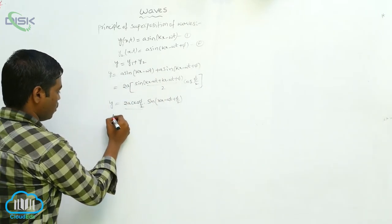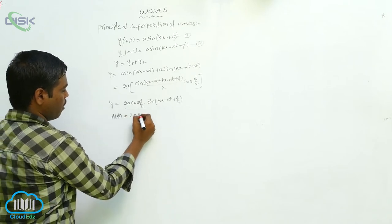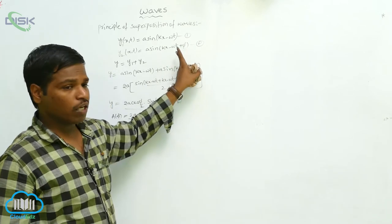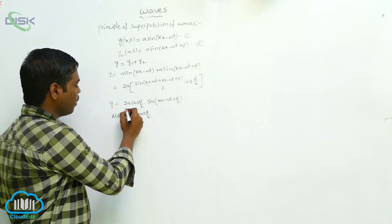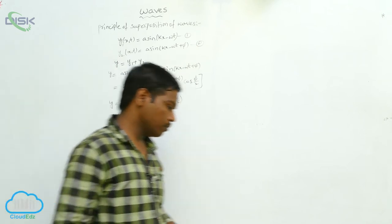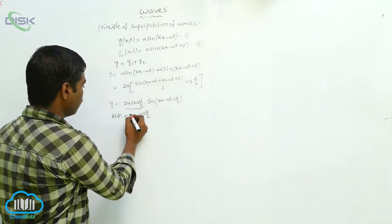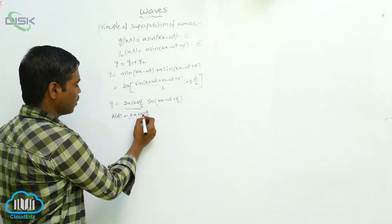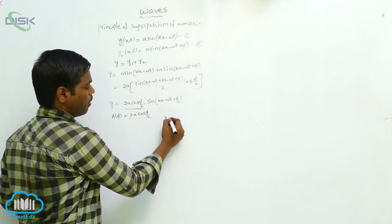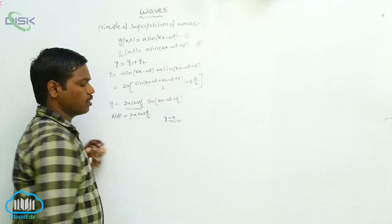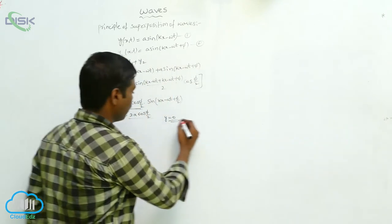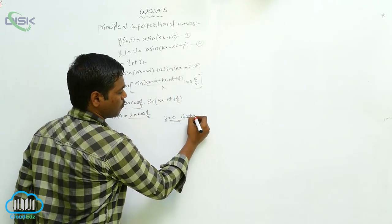The amplitude A(φ) = 2a cos(φ/2). When these two waves are travelling in the medium, the amplitude is changing from point to point. When the two waves are travelling in opposite directions, the resultant displacement becomes 0. When the displacement is 0, it is called destructive interference.